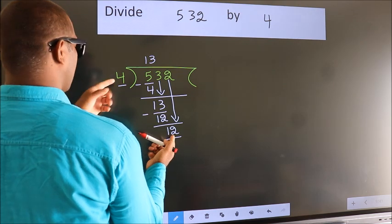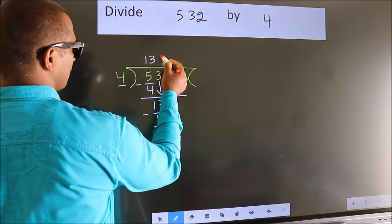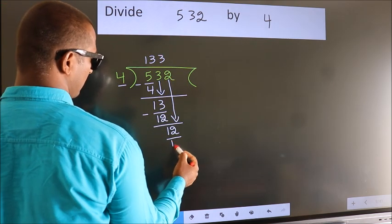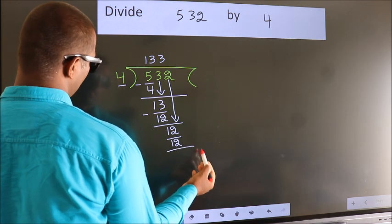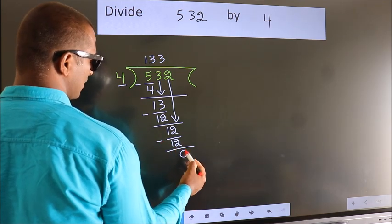When do we get 12 in 4 table? 4 threes, 12. Now we subtract. We get 0.